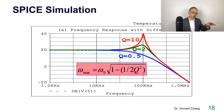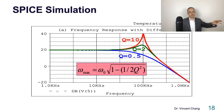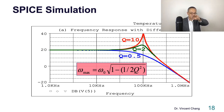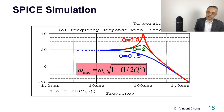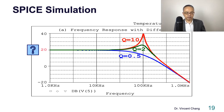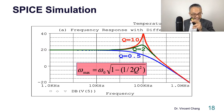Based on the low-pass magnitude expression, the boundary between peaking and no peaking is Q = 0.707. If you set the term inside the square root to zero, you solve and get Q = 1/√2 ≈ 0.707. That is the critical Q value.